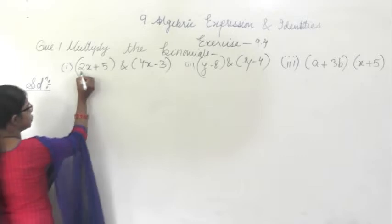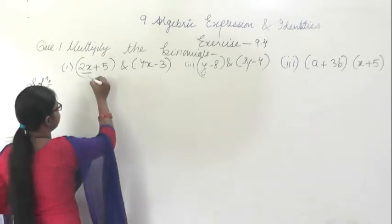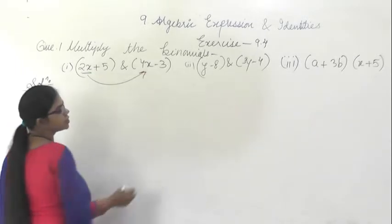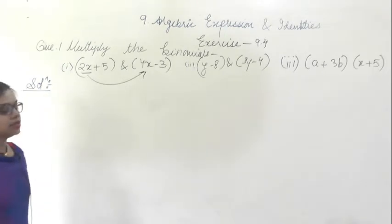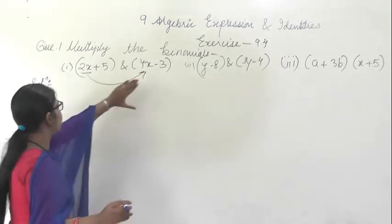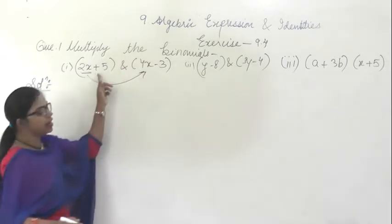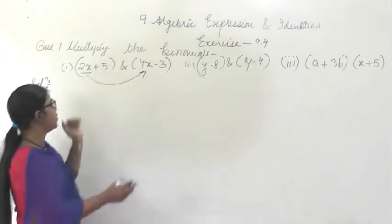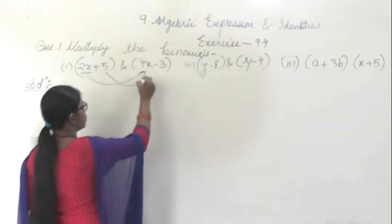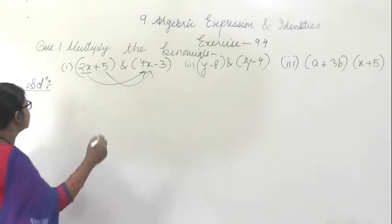First, this 2x will be multiplied with 4x minus 3 — this 2x will be multiplied with the whole term. After that, an addition sign will be there, then this 5 will be multiplied with the whole term. Okay, so let's start.